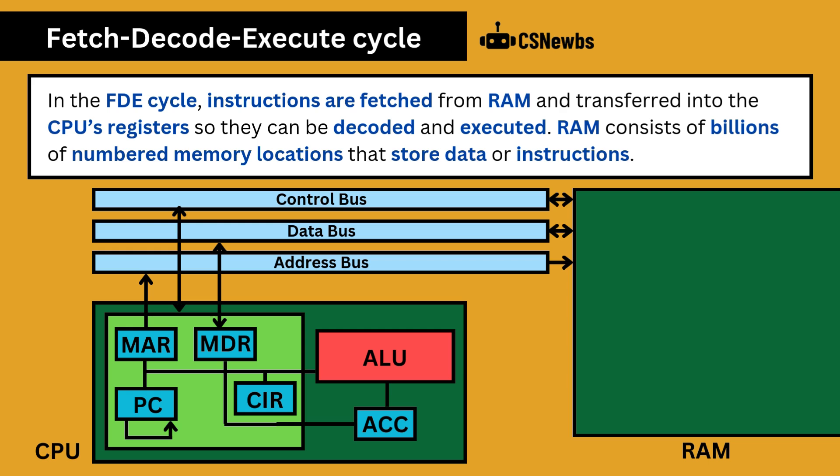In the FDE cycle, instructions are fetched from RAM and transferred into the CPU's registers, so they can be decoded and executed.